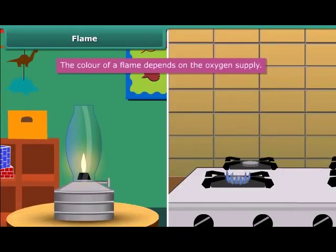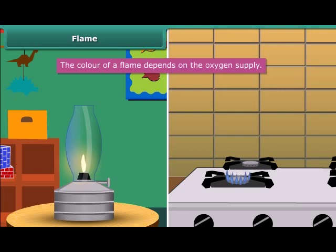When we look at a flame of a kerosene lamp, it is yellow in color, but the flame of a kitchen stove is blue. It is interesting to know that the color of a flame depends on the oxygen supply. If the oxygen supply is less, the flame will appear yellow due to incomplete combustion of fuel. And if it is more, the flame will appear blue due to complete combustion of fuel.